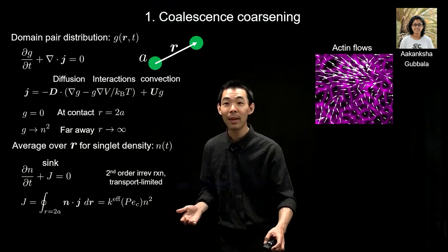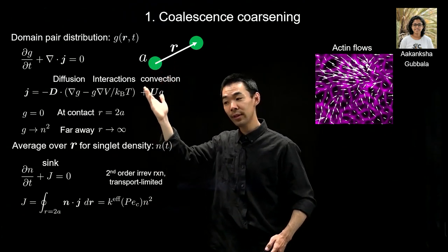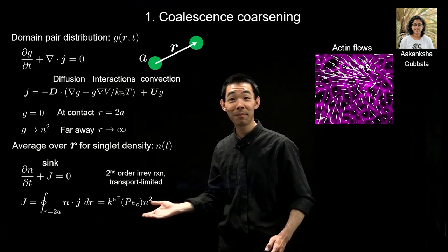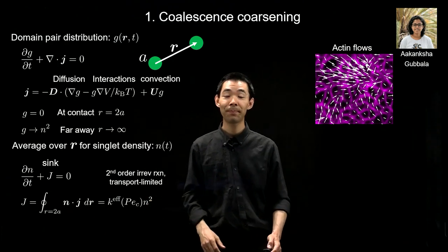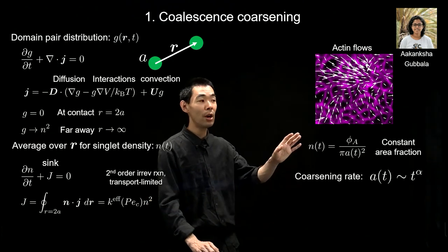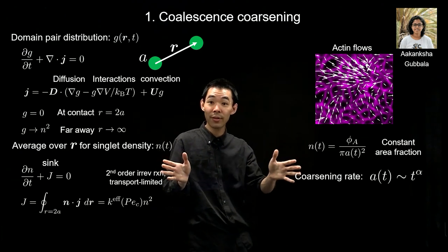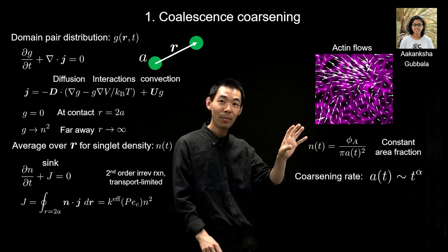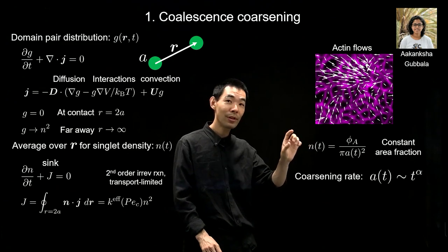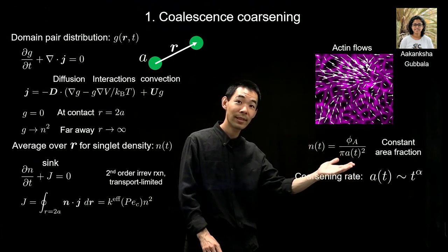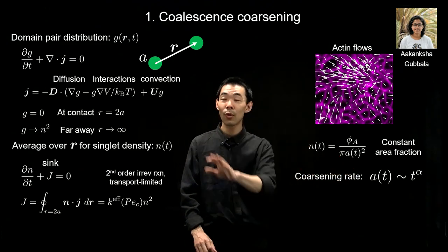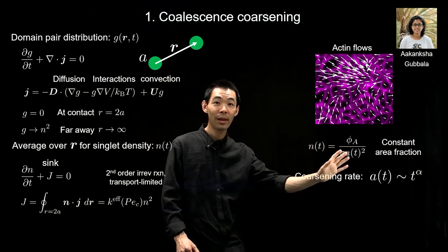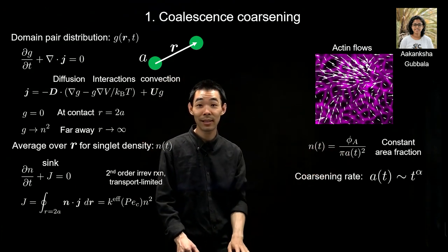Very far away, the domains are completely uncorrelated, so the pair distribution scales as the singlet domain density squared. Integrating over all distances R gives an evolution equation for the singlet density N, with a sink term J representing a contact integral over the pair flux. Physically, the frequency at which domains come into contact directly informs how quickly domain density decreases. We can rewrite this as an effective rate constant times singlet density squared — the same form as a second-order irreversible diffusion-limited chemical reaction.